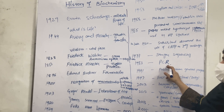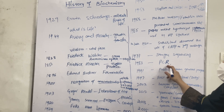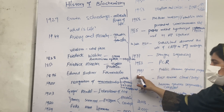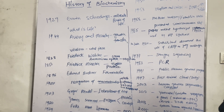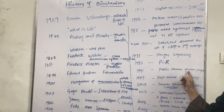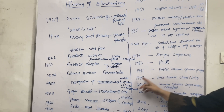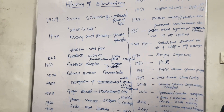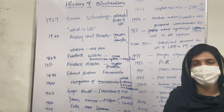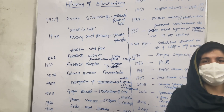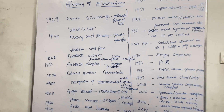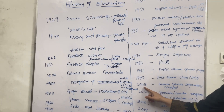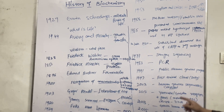In 1991, the Human Genome Project was given to the public sector and different genomes were studied. In 1997, the first animal was cloned — as you all know, the name of that cloned animal is Dolly.